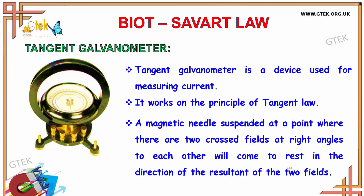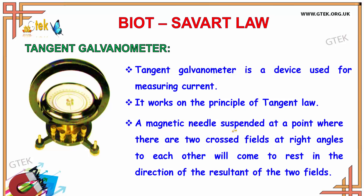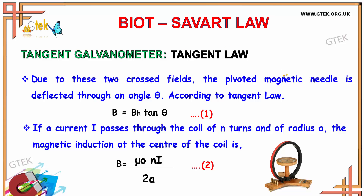Now let us see about the tangent galvanometer. The tangent galvanometer is a device used for measuring current. It works on the principle of tangent law. A magnetic needle suspended at a point where there are two crossed fields at right angles to each other will come to rest in the direction of the resultant of the two fields. Due to these two crossed fields, the pivoted magnetic needle is deflected through angle theta, and according to the tangent law, B equals BH tan theta.